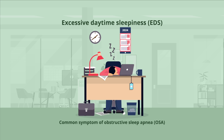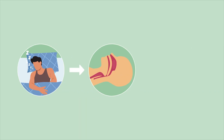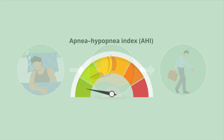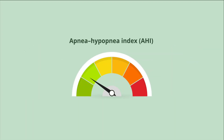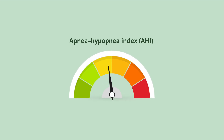In OSA, breathing is repeatedly blocked, partially or completely, which can lead to decreased sleep quality and quantity. The severity of OSA is traditionally gauged by the Apnea-Hypopnea Index, or AHI, which reports the frequency of respiratory events per hour.